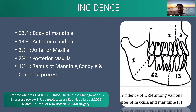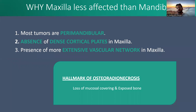In the mandible, 62 percent of cases are seen in the body of the mandible, 13 percent in the anterior mandible, 2 percent in the maxilla, and 1 percent in the mandibular condyle and coronoid process. Maxilla is not commonly affected because of the absence of dense cortical plates and the more extensive vascular network in the maxilla.